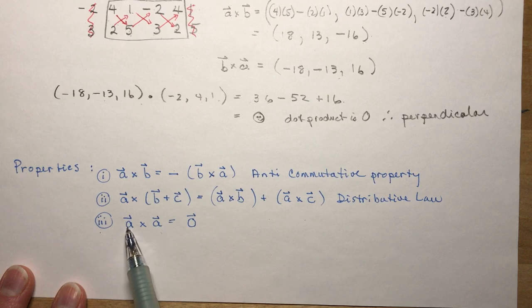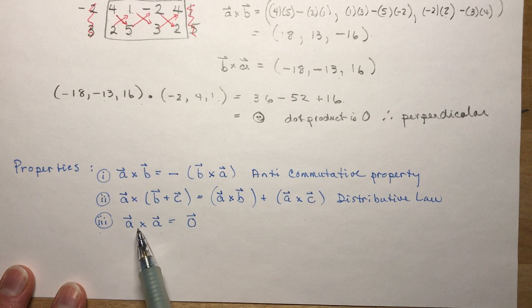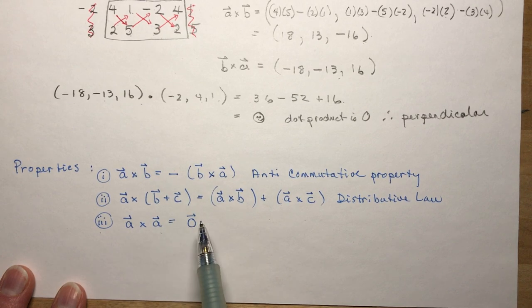And that if you have a cross product of the very same vector or we already said it could be a scalar multiple which means it would be two collinear vectors you're always going to get zero.